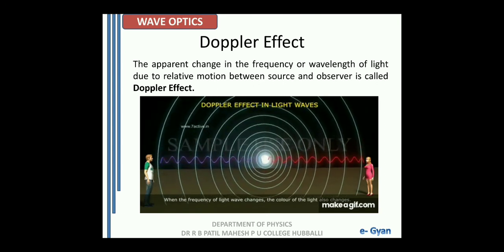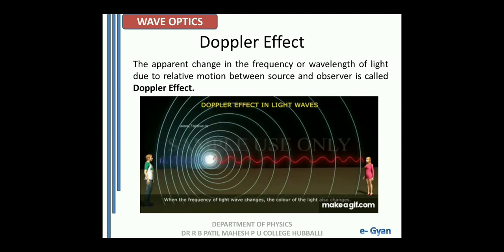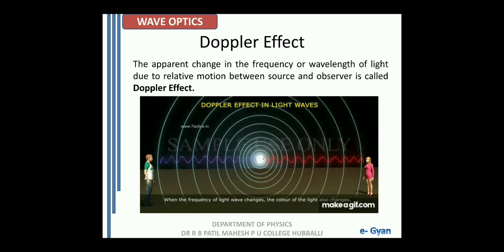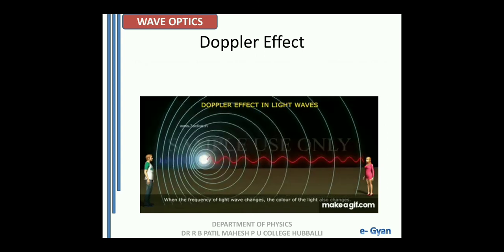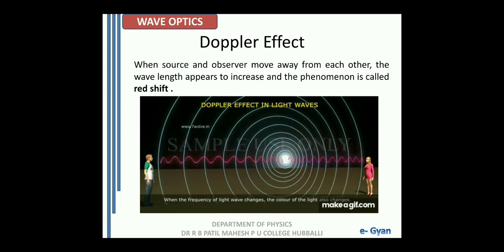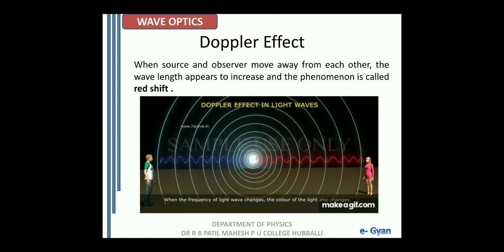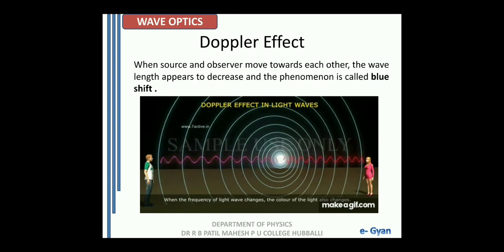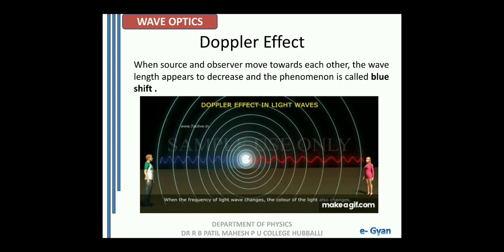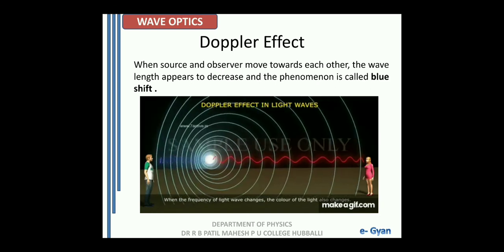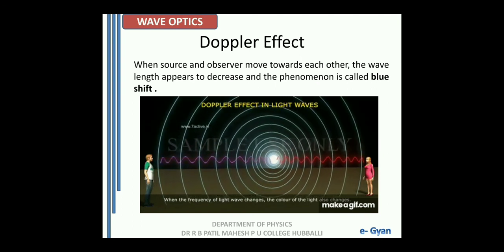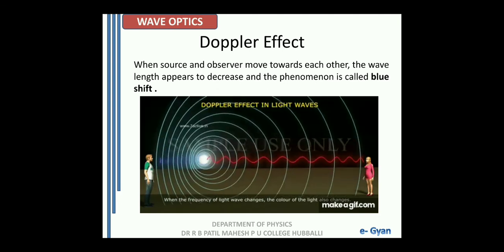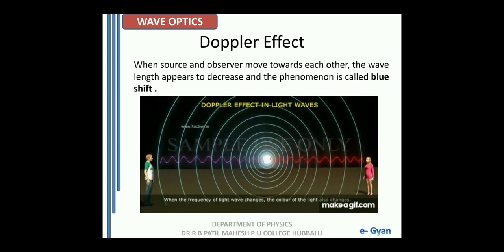If you see the picture carefully, you find that the colour of light for the boy is changing from blue to red, and for the girl it is changing from red to blue. Hence, when the source and the observer move away from each other, the wavelength appears to increase and this phenomenon is called redshift. And when the source and the observer move towards each other, the wavelength appears to decrease and the phenomenon is called blueshift. In this diagram, for the boy the phenomenon is redshift and for the girl it is blueshift.